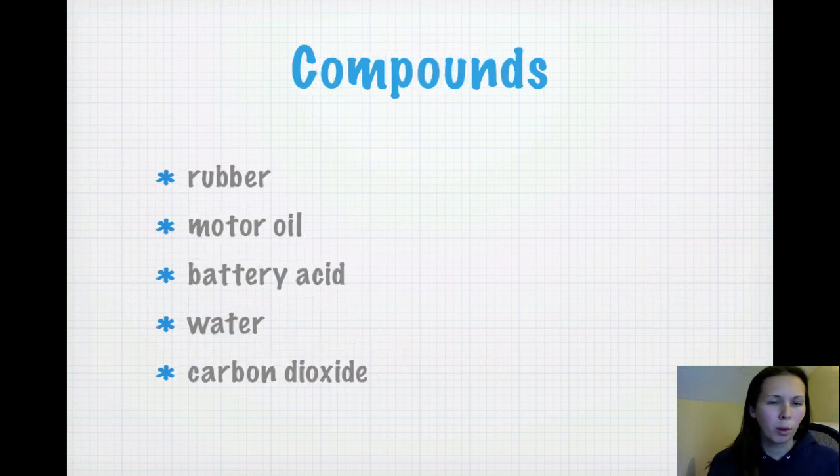Whereas these compounds, rubber, motor oil, battery acid, water, and carbon dioxide, water and carbon dioxide are not elements either. None of these are on the periodic table either. I just want to clarify that. Water I can understand what people might have thought that water was an element because people talk about the elements as being water, air, wind, and fire, but it's not an element as we understand it in chemistry.